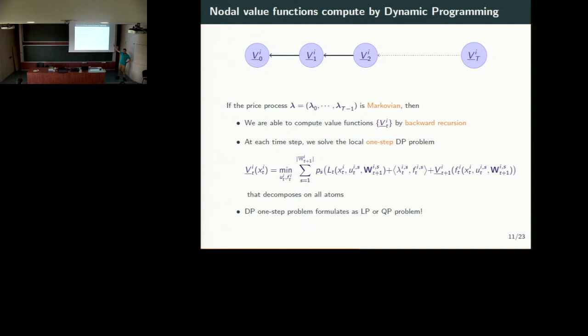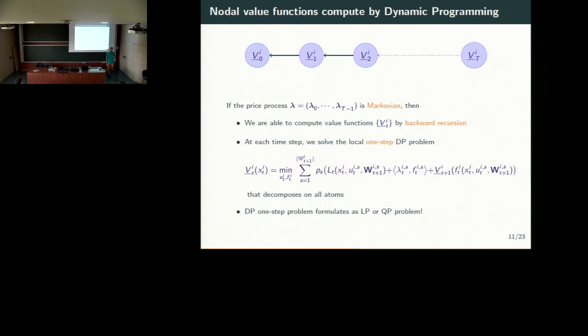Let's emphasize the fact that each value function is local — so they are quite small compared to the global value function of the problem. For instance, they lie in dimension one or two, whereas the global value function of the problem has dimension 48, 100, and so on. So it's much easier to solve these local value functions than the global value function. We break apart the curse of dimensionality.